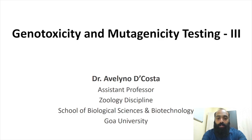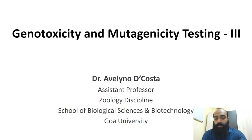Hello everyone, my name is Dr. Abelino de Costa, and in this video I will be talking about some other types of genotoxicity and mutagenicity tests. In the previous two videos I spoke about some genotoxicity and mutagenicity tests, particularly those done in bacteria like the Ames test and the reverse bacterial assay, and certain in vitro mammalian models such as the mouse lymphoma assay, the HPRT assay, and the sister chromatid exchange. In this video I will be talking about some more advanced techniques used for testing genotoxicity.